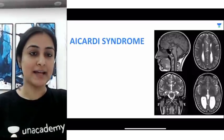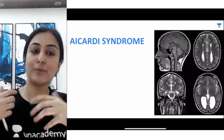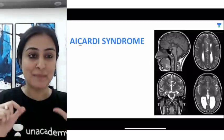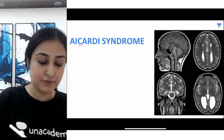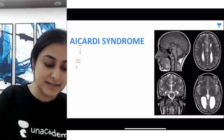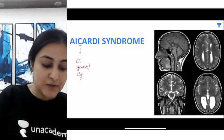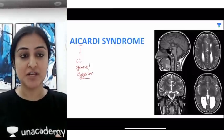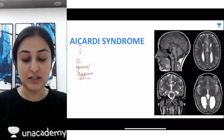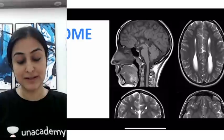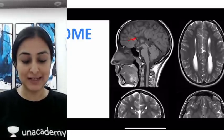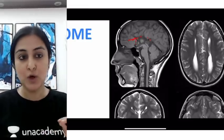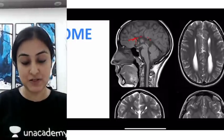The first one is Aicardi syndrome. We want to take out three letters from the name — C, R, and I — to remember the three manifestations. From C, the main thing in the brain is corpus callosum agenesis or dysgenesis. The most helpful MRI sequence is the sagittal sequence. In the mid-sagittal plane, when you do not see the bundle of corpus callosum, you know it is absent. You might see a small dysgenetic corpus callosum or it might be completely absent.